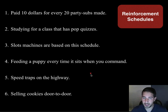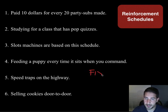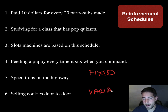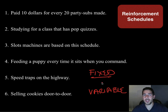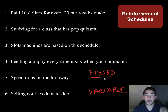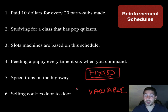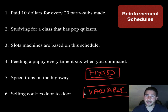Remember, you've got like three things. You've got fixed or variable. Fixed means it happens every this many times or this long of a time — so you know when it's going to happen. If you know when it's going to happen, it's fixed. If you don't know when it's going to happen, it's variable.